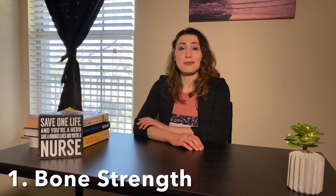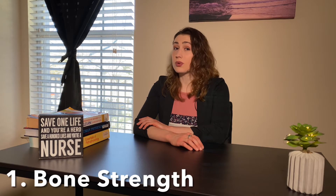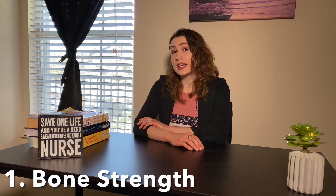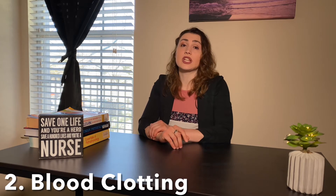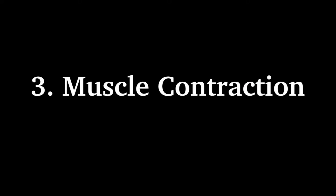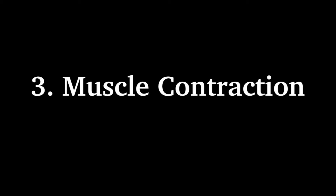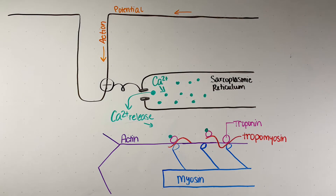Because 99% of calcium is stored in the bone, calcium is really important for bone strength — this is why we were always told as kids to drink milk for strong bones. Calcium is also really important for blood clotting; it's required for all but two steps in the coagulation cascade. Within the cell, calcium entering the cytoplasm causes contraction of muscle fibers. Action potentials cause calcium release from the sarcoplasmic reticulum; calcium binds troponin, which moves tropomyosin out of the way, allowing myosin heads to bind actin and cause muscle contraction.